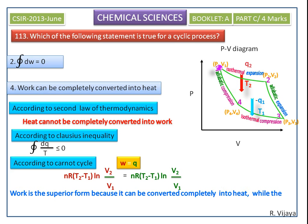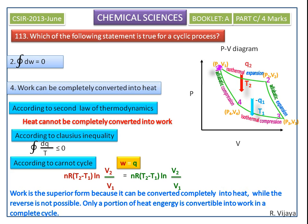So, work can be completely converted into heat while the reverse is not possible. So, the fourth option is the correct answer. The fourth option is the work can be completely converted into heat.